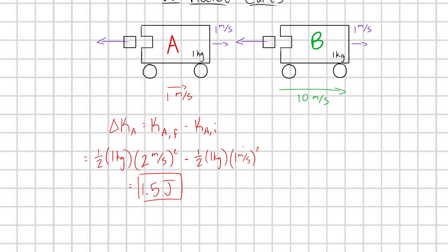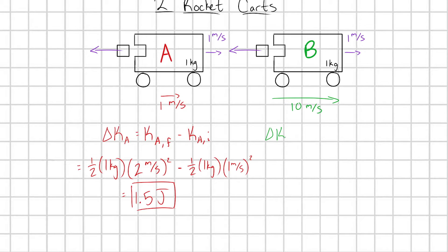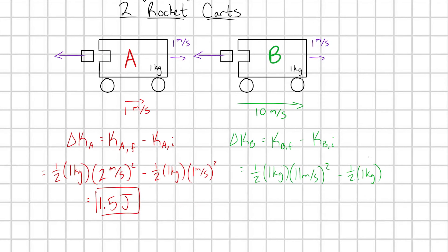Let's go ahead and do the same thing for cart B. So delta KB here is going to be equal to, we take KB final minus KB initial, right? And this is going to be, we go one-half times one kilogram times, what's our final velocity? 10 plus one, 11 meters per second squared, minus one-half times one kilogram. And cart B started out moving at 10 meters per second squared. And now using these numbers, we're going to see that the change in kinetic energy for cart B is 10.5 joules.